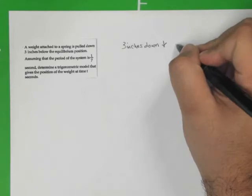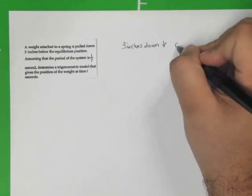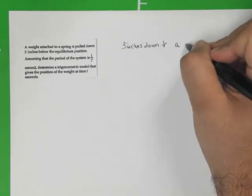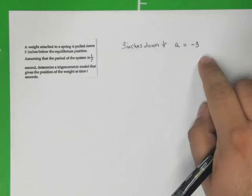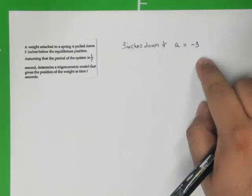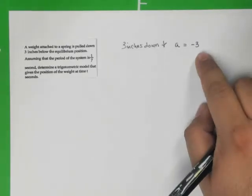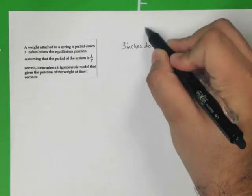So that corresponds to an amplitude of three units, but since it's being pulled down, we're going to write it as minus three. Of course, the amplitude is positive here, but this is the a value in the following.